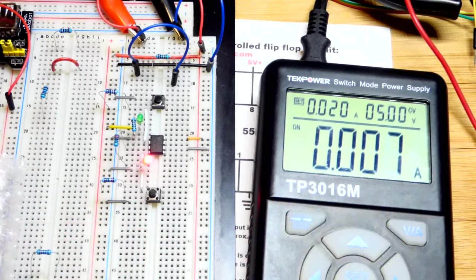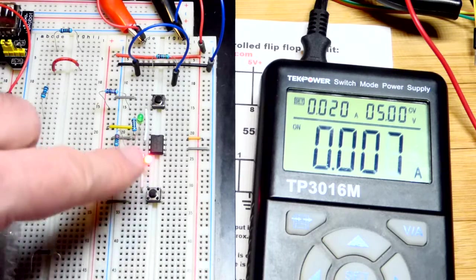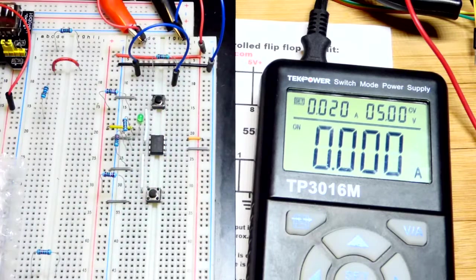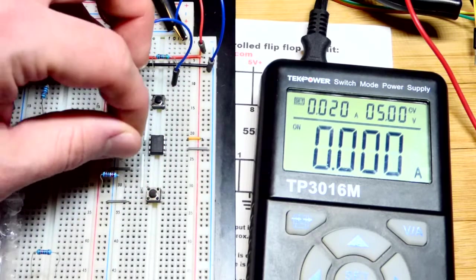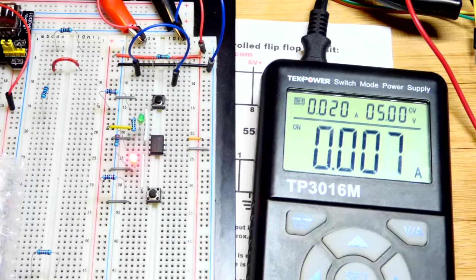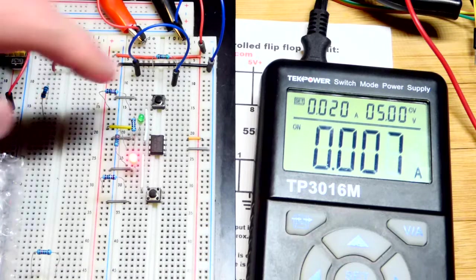you can see seven milliamps of current. So, that's pretty much all being measured, what's going through the LED. The rest of the circuit's not really using much power. I can unplug the LED. You can see it goes to zero. So, we got about seven milliamps of current. This isn't completely accurate, but maybe it's six, maybe it's eight milliamps. Going through the LED.